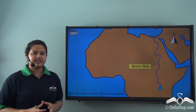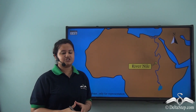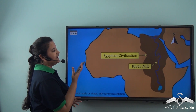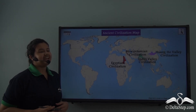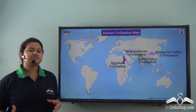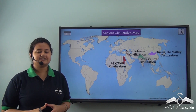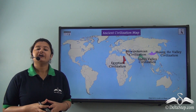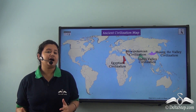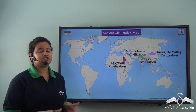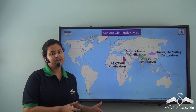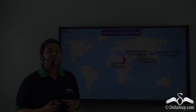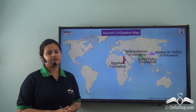Egyptian civilization is an ancient civilization which flourished along the banks of River Nile. In the previous video, we saw that the Egyptian civilization flourished on the fertile plains of River Nile. Apart from the Egyptian civilization, the other ancient civilizations of the world also flourished on the fertile plains of some rivers.